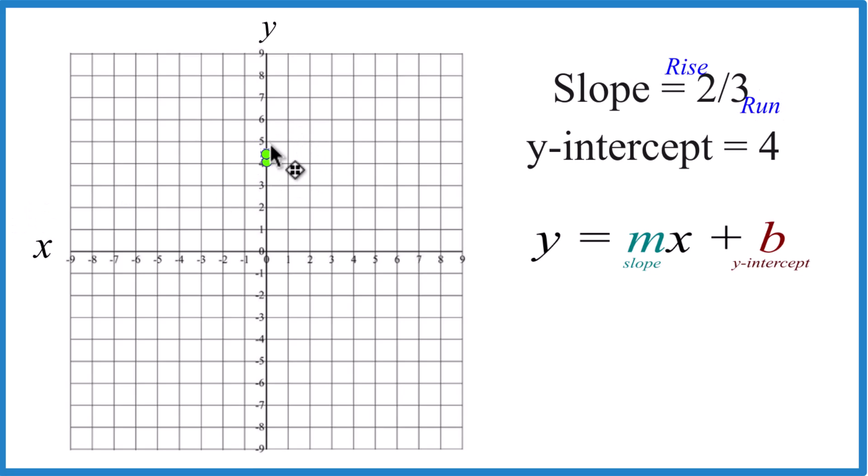So go to the y-intercept, rise one, two, run one, two, three. From there, do it again. Rise two, one, two, three, and you can see the line.